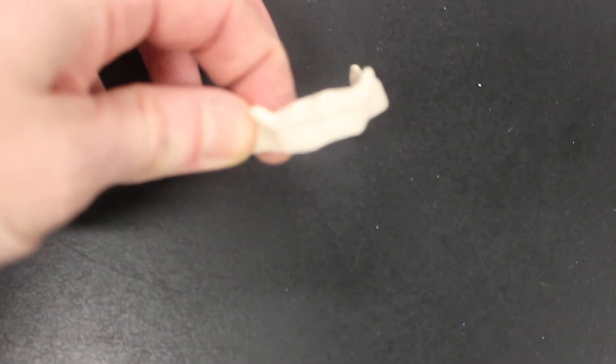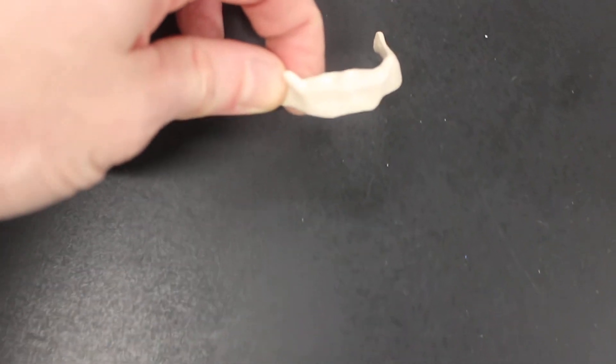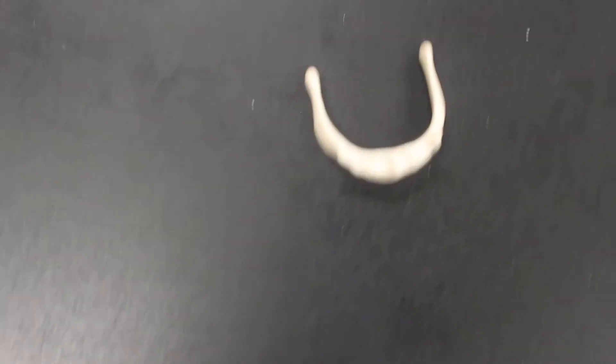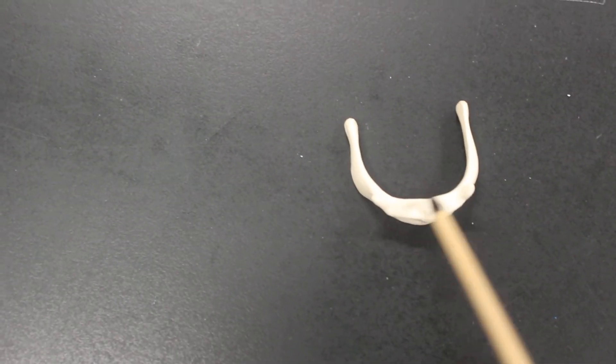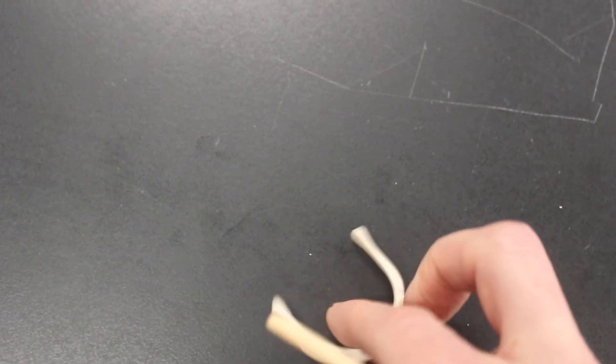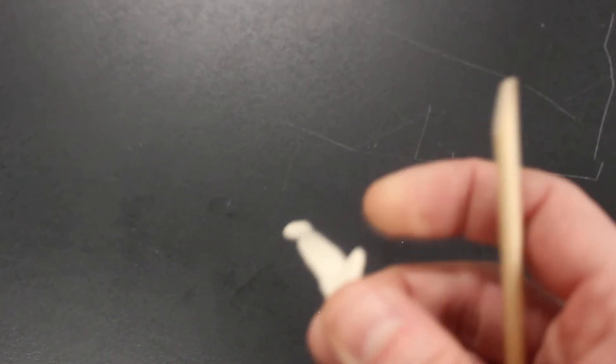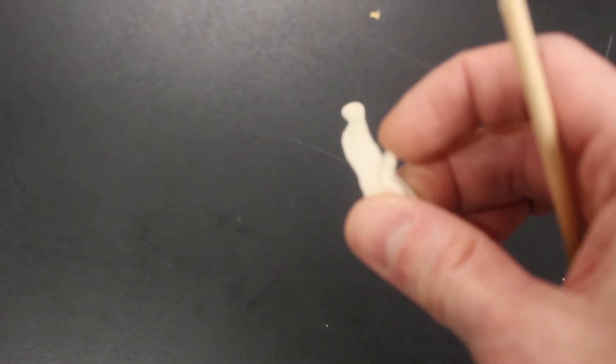This little bone here is the hyoid bone. It's very tiny. The front middle part of it is the body. It has these two little bumps. These are the lesser horns and then the parts sticking out in the back, those are the greater horns. Lesser horn, greater horn, body in the middle.